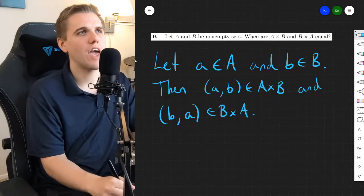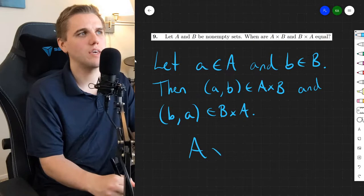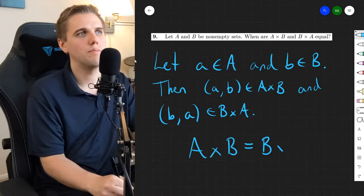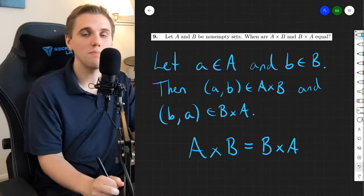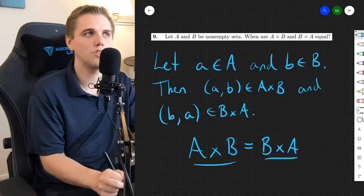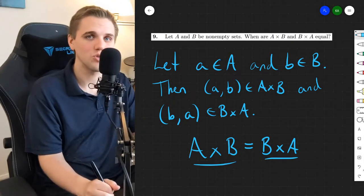But what if A cross B equals B cross A? What does it mean when these two things are equal to each other?